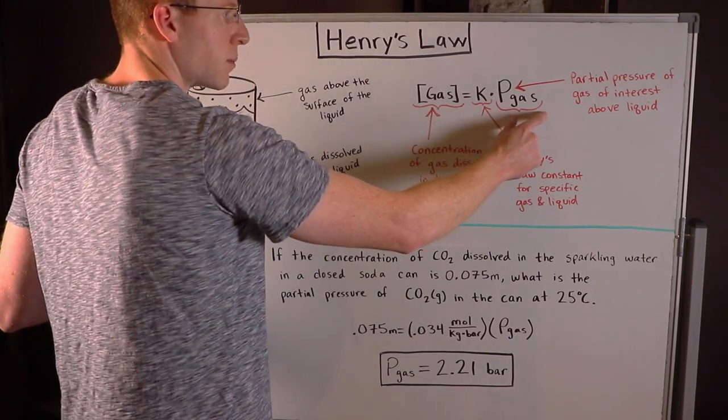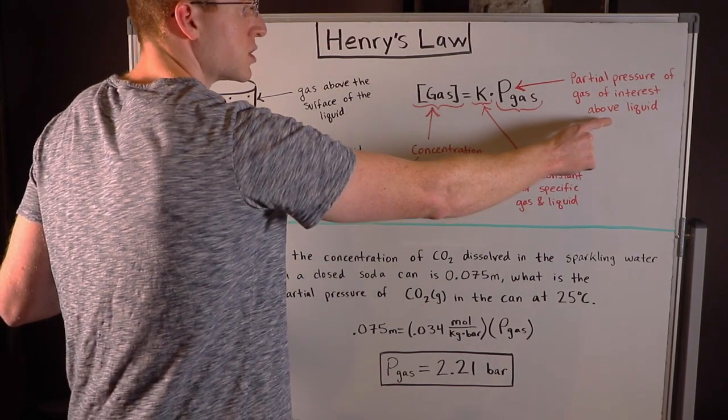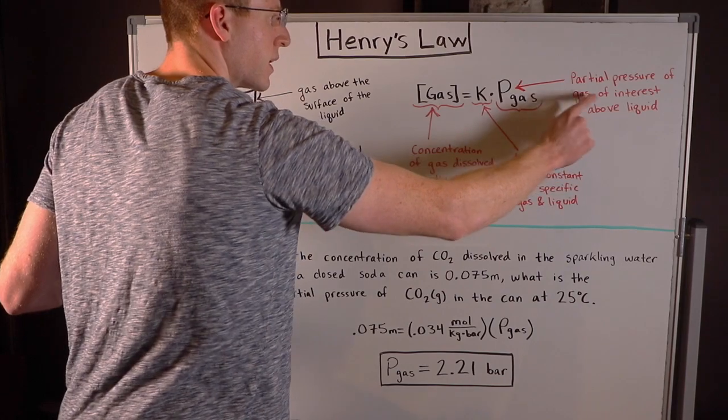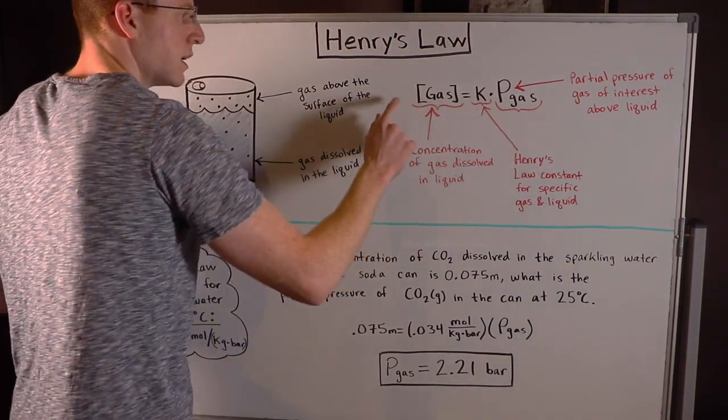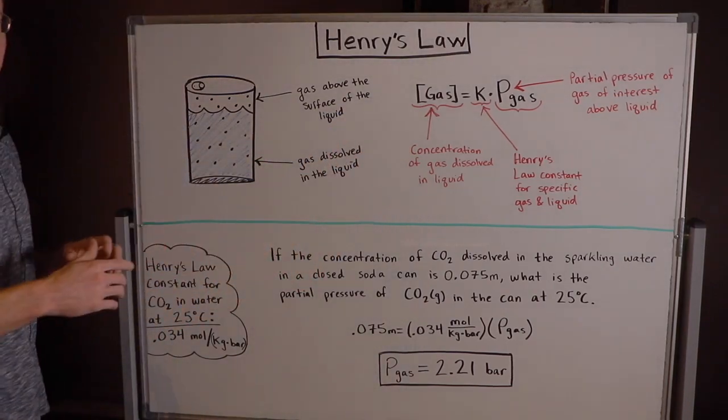P gas is the partial pressure of your gas of interest above the liquid and importantly this has to be a single gas of interest that you're looking at. You can only do Henry's Law for one gas at a time.